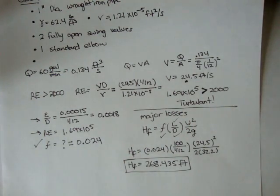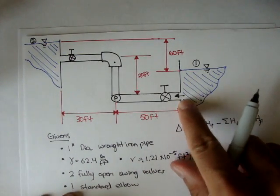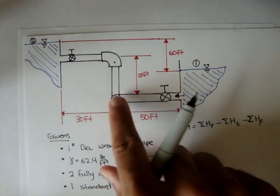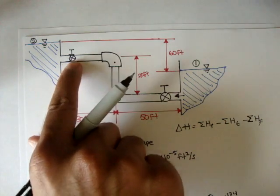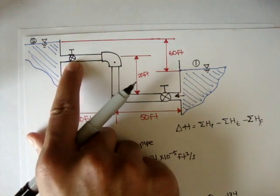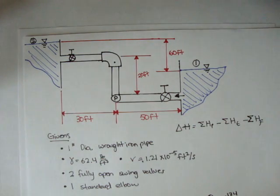Now, what about the minor losses? Remember, our minor losses - minor losses is everything else besides the pipe. So it would be the squared entrance, the fully open swing check valve, the standard threaded elbow, and the second valve, plus the exit here at 0.2.